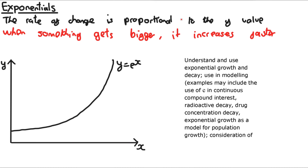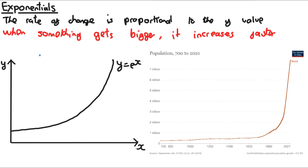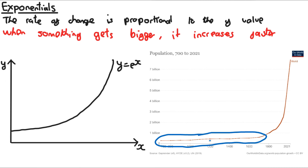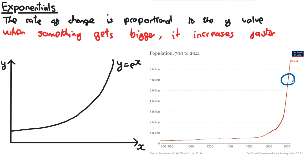The spec gives many examples, but the best is population growth. Consider a graph of world population from the year 700 to today, with the x-axis showing the year and the y-axis the number of people. For long periods it's pretty flat, increasing slowly. But by the 1800s it starts increasing much faster, and by recent times it's basically a vertical line. The question is: why is the line so much steeper recently compared to earlier?